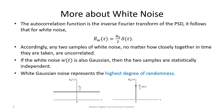You can think of white Gaussian noise as the highest degree of randomness — there is no correlation, so if you get a value now, the next value could be anything.